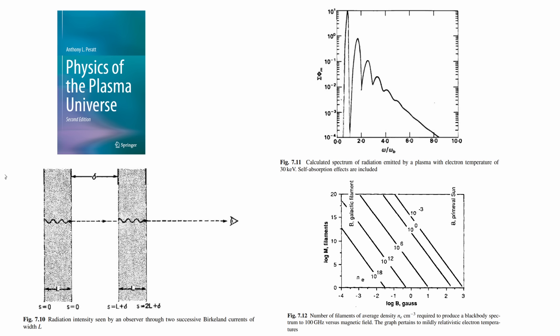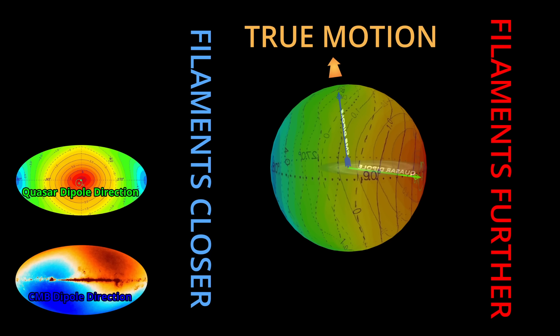Plasma cosmology treats the CMB not as a primordial relic, but as a local radiation field generated by plasma processes. This opens two possibilities. One is that the dipole really is our motion through this field. In that case, the quasar dipole would have to be explained by structural differences between cosmic filaments.